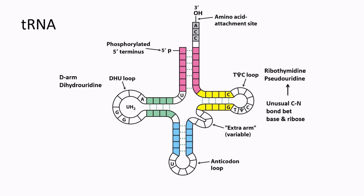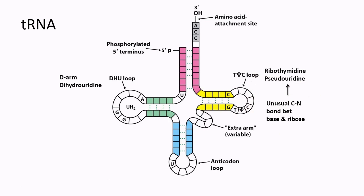Therefore a minimum of 20 amino acid tRNAs are required in the cell; however, cells have 32 different tRNAs. The tRNA consists of an amino acid arm which carries the amino acid. The sequence of this arm is fixed and known as CCA, and the 5' end of the tRNA is modified and consists of a guanylate residue. The anticodon loop binds with the codon sequence of the mRNA. We also have ribothymidine and pseudouridine in this loop. Pseudouridine is a type of uracil with a different carbon-nitrogen bond between the base and the ribose sugar.